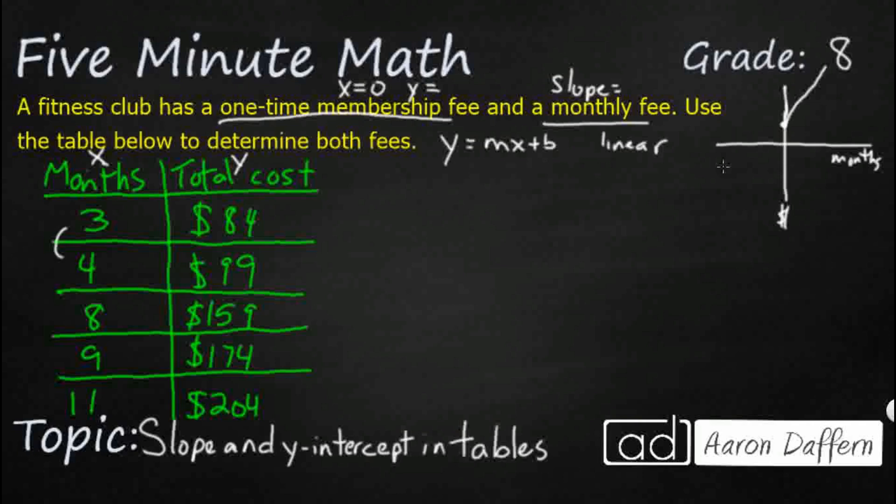We've got two different consecutive months. We've got 3 and 4, we've got 8 and 9. So since those two are right next to each other, we can just figure out, how much does it increase from 84 to 99? That looks like a plus 15. Does that pattern hold true here? 159 to 174? Yes, it does. So your slope is 15. Or you can say your monthly fee is $15 a month. That's that slope of this line.